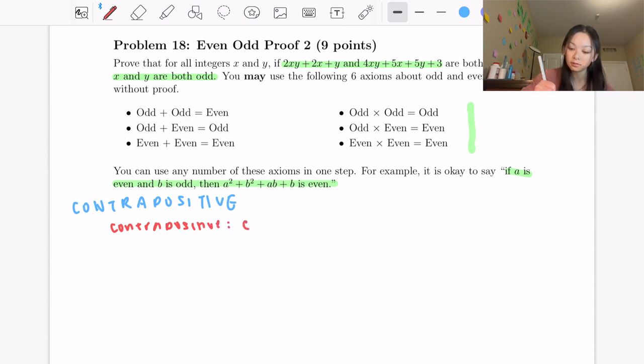And this is basically if x is even or y is even, then we can say that 2xy + 2x + y or 4xy + 5x + 5y + 3 is even.